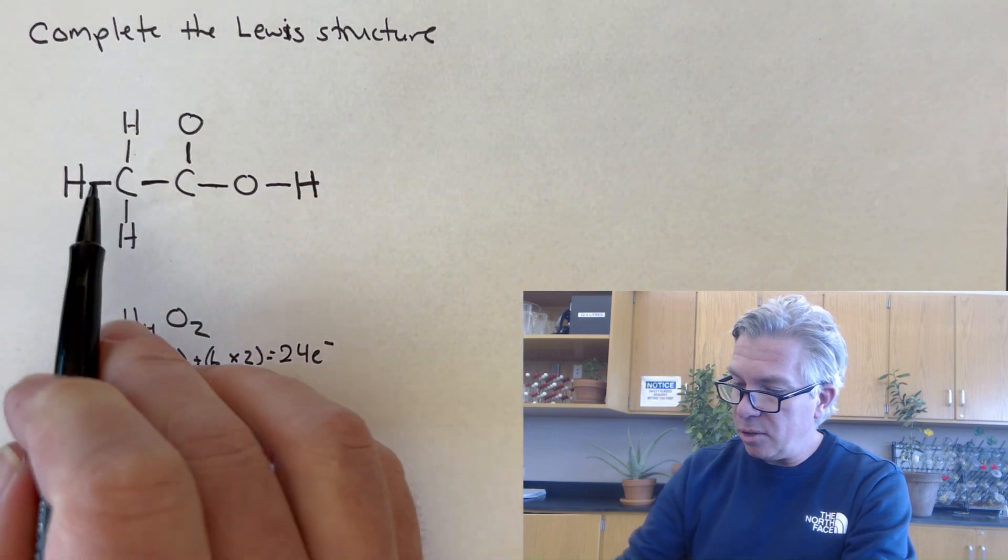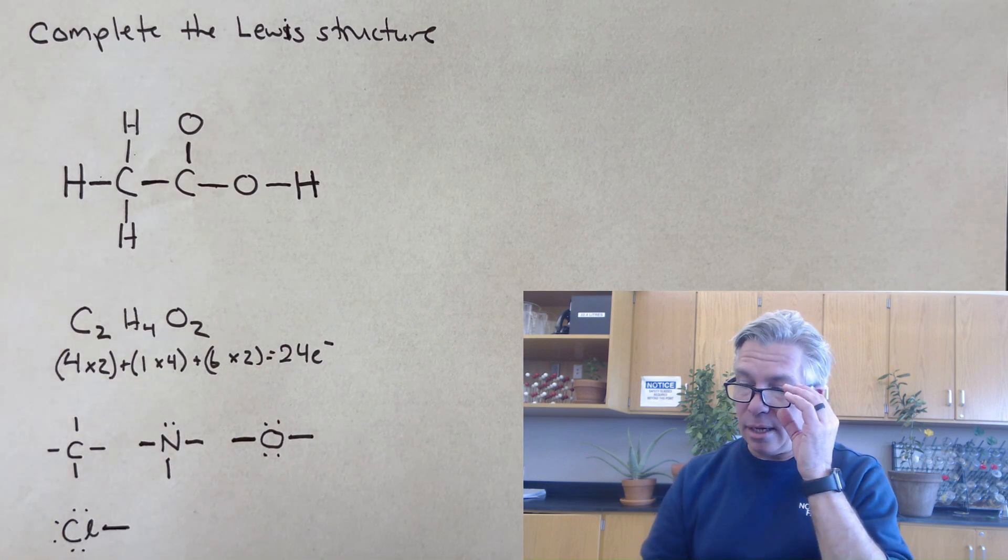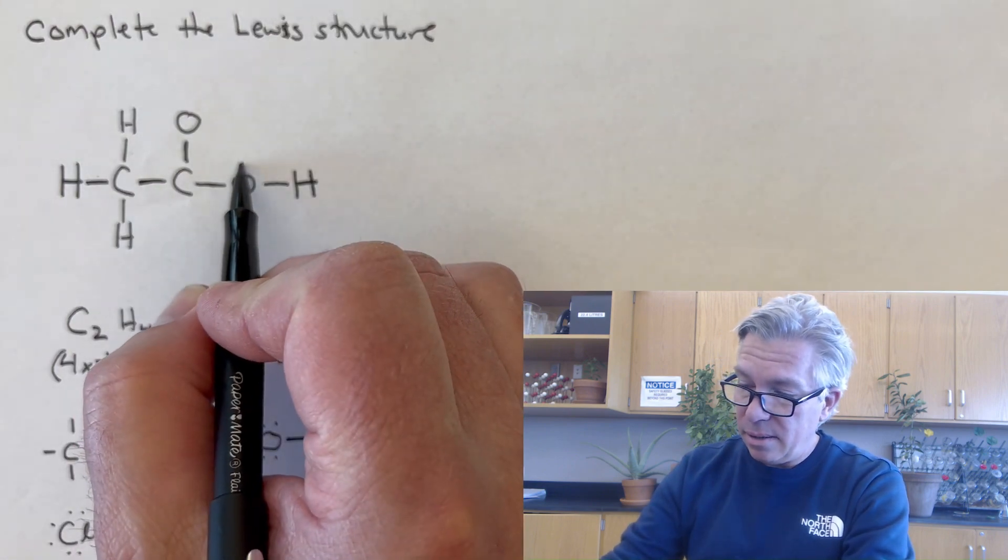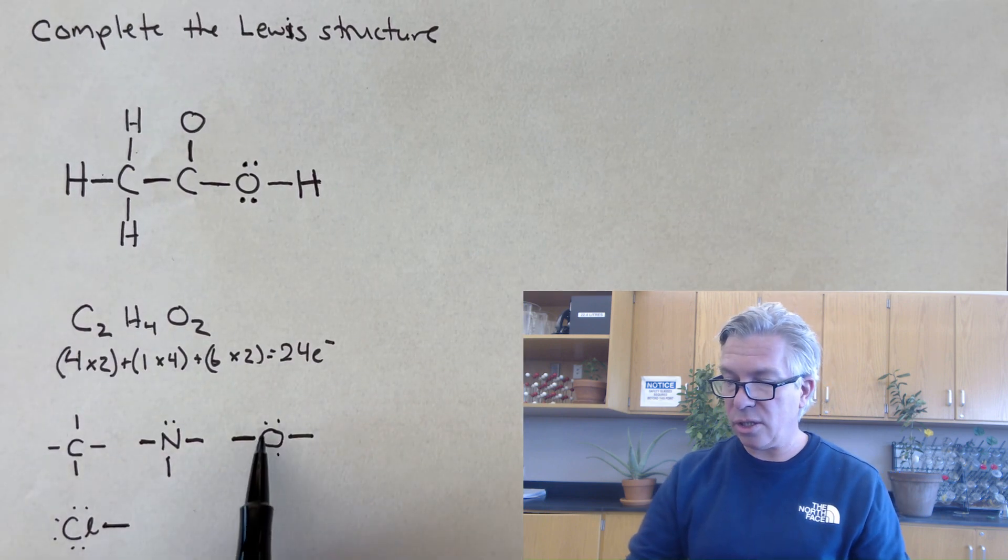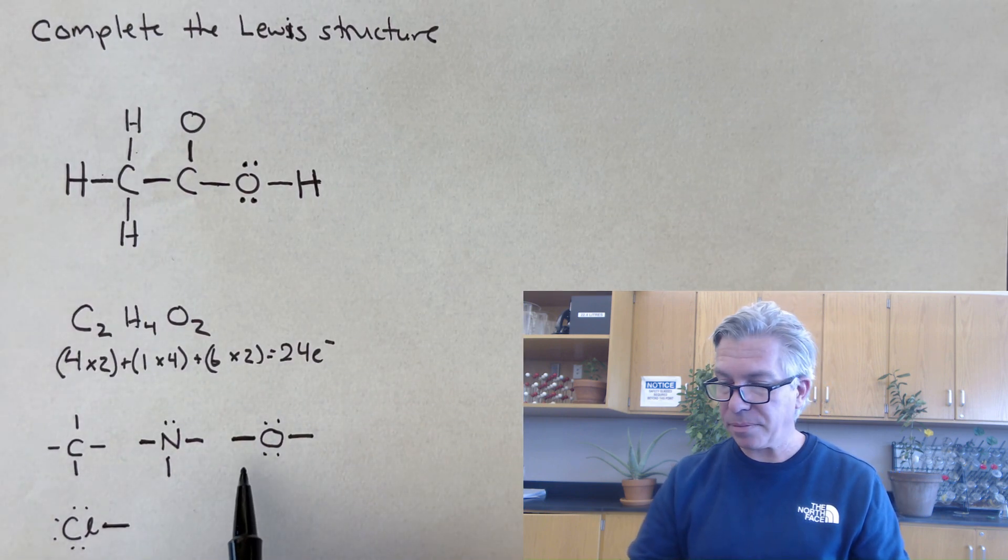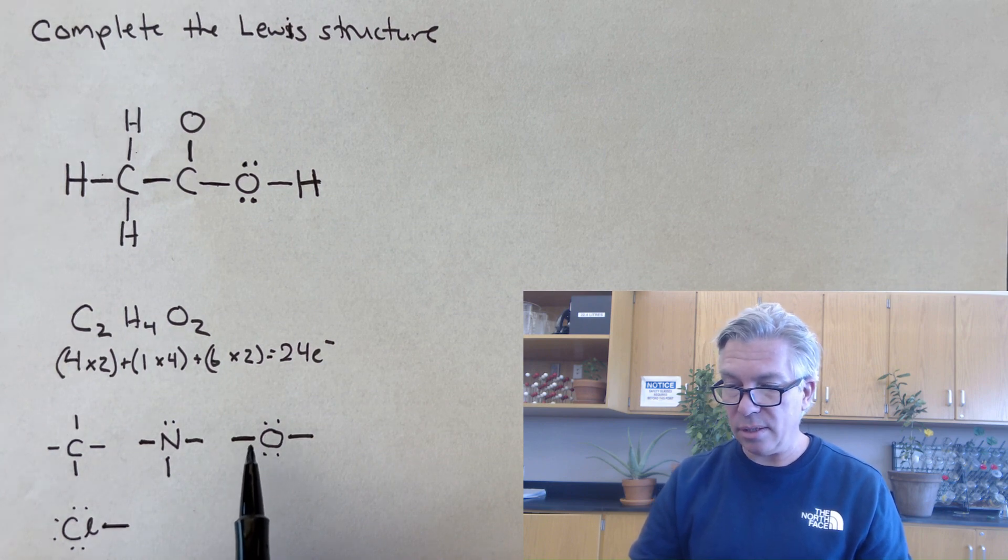I've used up 2, 4, 6, 8, 10, 12, 14 electrons. So I have 10 more electrons to go. And I'm going to guess that four of those electrons are going to go on that oxygen because oxygen wants to make that pattern.